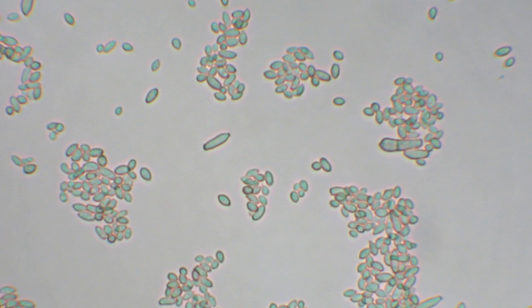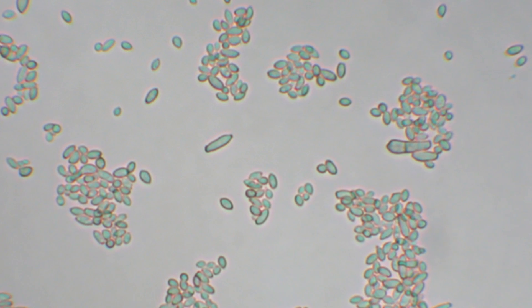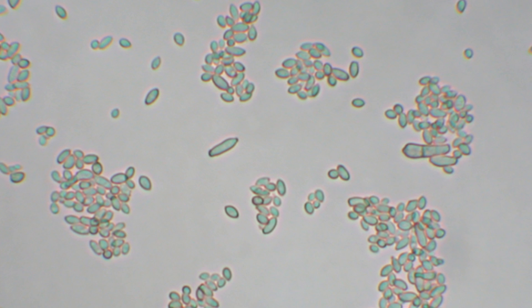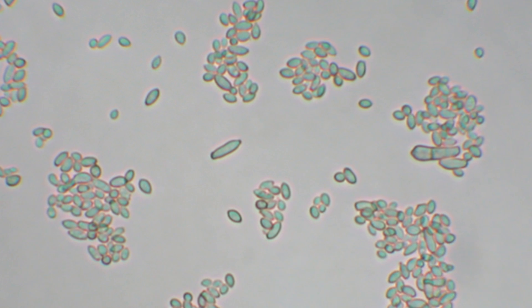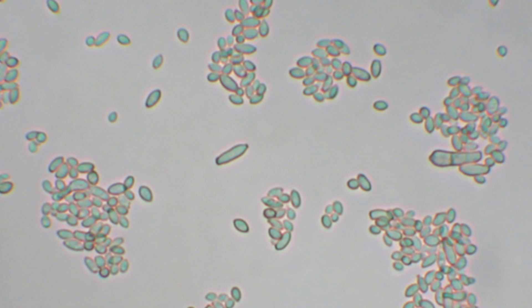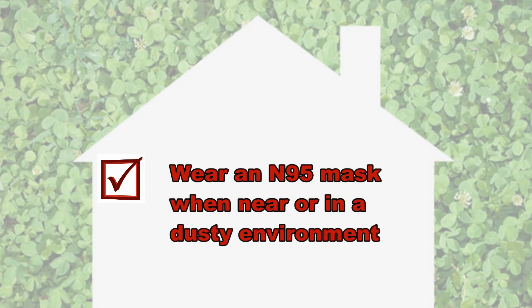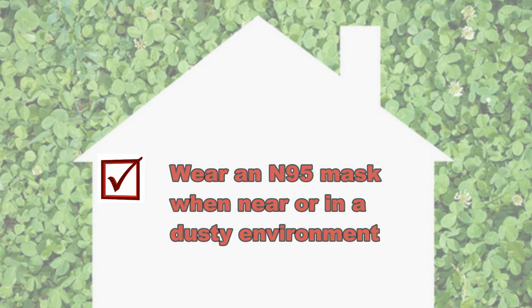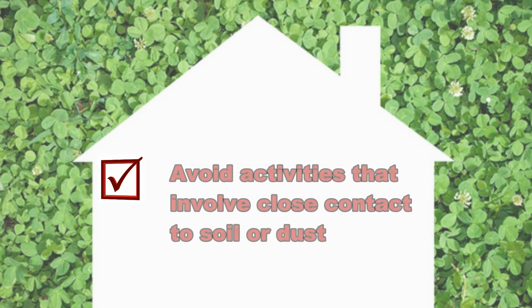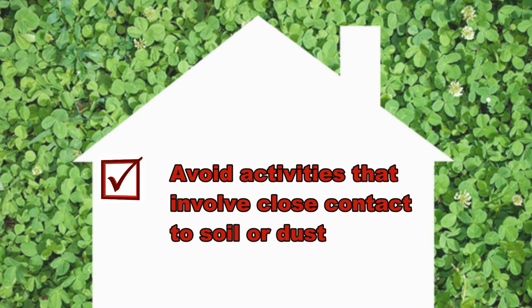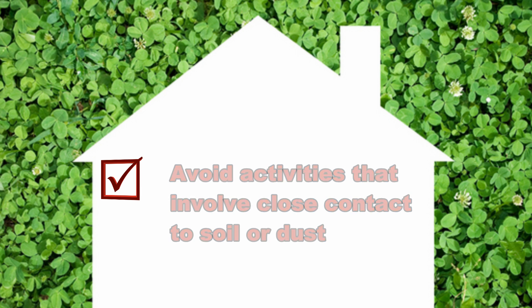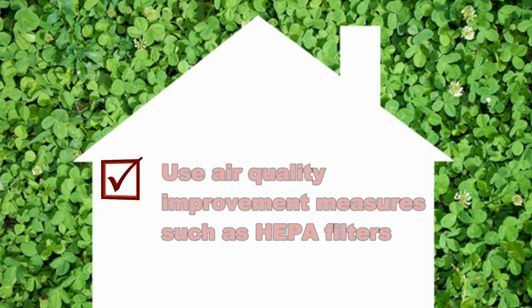The CDC recommends the following prevention steps for people with weakened immune systems or severe lung diseases: wear an N95 mask when near or in a dusty environment such as a construction site; avoid activities that involve close contact to soil or dust such as yard work or gardening; and use air quality improvement measures such as HEPA filters.